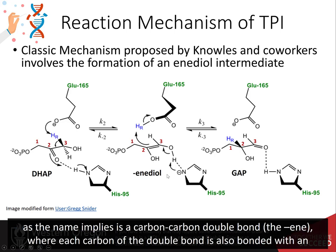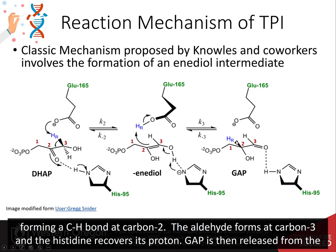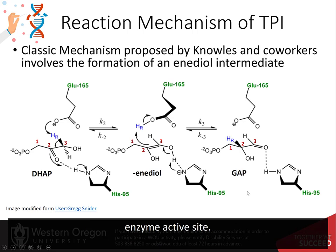An enediol, as the name implies, is a carbon-carbon double bond (the 'ene') where each carbon of the double bond is attached to an alcohol functional group (the 'diol'). The enediol is unstable, and the pi-bond electrons abstract a proton from the glutamate residue, forming a carbon-hydrogen bond at carbon-2. The aldehyde forms at carbon-3, and histidine recovers its proton. Glyceraldehyde 3-phosphate is then released from the enzyme active site.